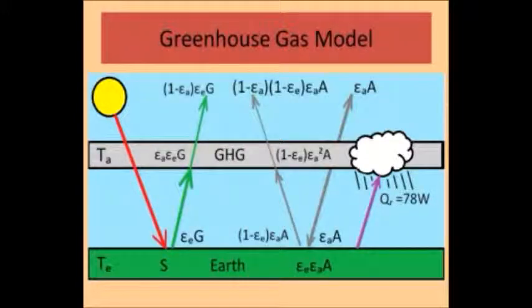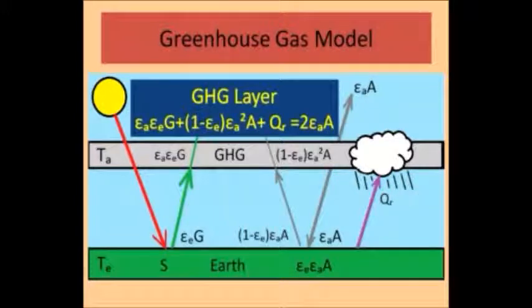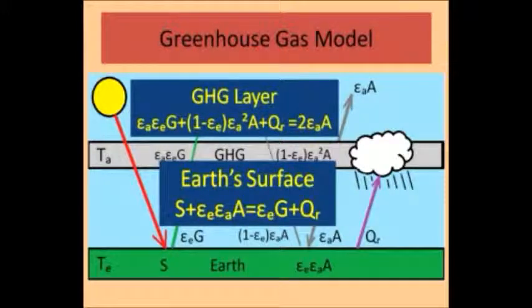The additional details in this slide come from my previous video. But in summary G is the black body radiation of the ground. A is the black body radiation of the greenhouse gas layer. Epsilon E is the emissivity and absorptivity of the ground, and Epsilon A is the emissivity and absorptivity of the greenhouse gas layer. For equilibrium the energy into the greenhouse gas layer must equal the energy out. That is by definition. This energy balance equation is shown in the blue box. In the lower highlighted box is the energy balance equation for the Earth's surface.